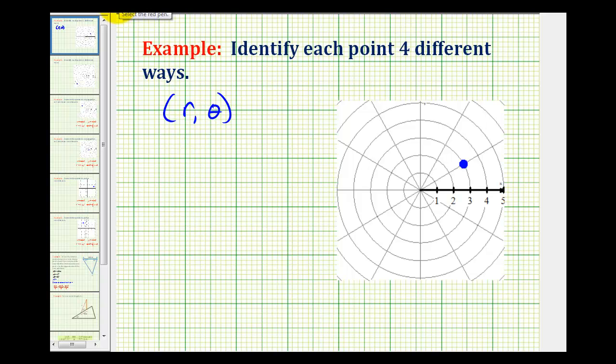Let's start by listing two ordered pairs for this point when r is positive or greater than zero. If r is positive, we can tell that this point is three units from the pole - one, two, three - so r is going to be three in both cases.